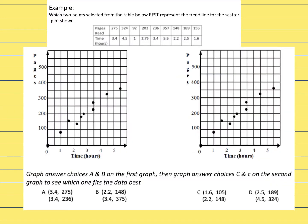Here's the example we're going to look at. It says which two points from the table best represent the trend line for the scatter plot that's shown. So technically, I duplicated this graph and I just made another one here.